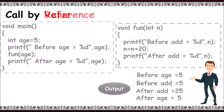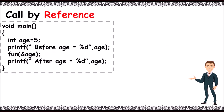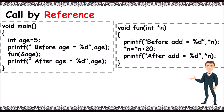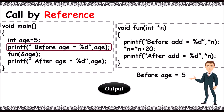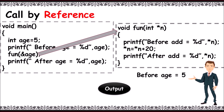Let's take another example for call by reference. This program contains two functions: main and fun. In main, age is initialized to 5, it prints 'before age = 5', then calls function fun. Here, we pass the address of age — that is, ampersand age — to fun. Control goes to void fun, and the address is now stored in pointer n, that is asterisk n.